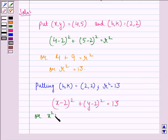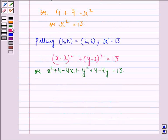We can write it as x² + 4 - 4x + y² + 4 - 4y = 13. This equals 13 minus 4 minus 4, which is 5.